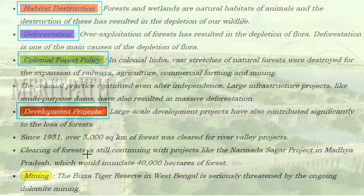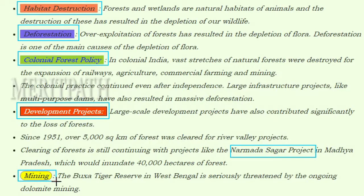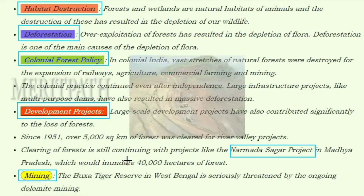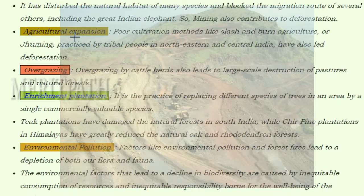Clearing of forests is still continuing with projects like the Narmada Sagar Project in Madhya Pradesh, which would inundate 40,000 hectares of forest. Mining is another cause — the Buxa Tiger Reserve in West Bengal is seriously threatened by ongoing dolomite mining, which has disturbed the natural habitat of many species and blocked the migration route of several others, including the great Indian elephant.